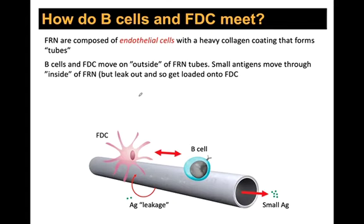During inflammation, lymph nodes get bigger because they swell with cells — that's why you can feel swollen lymph nodes when sick, indicating an active immune response. Inflamed lymph nodes also recruit cells and express chemokines that retain cells longer, increasing the chance of a B cell finding its antigen. So transit time and lymph node size do change during an immune response.